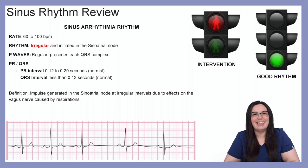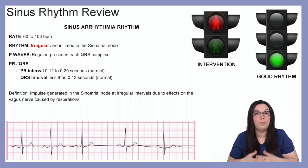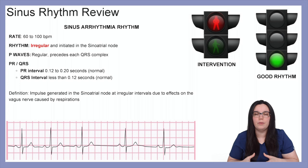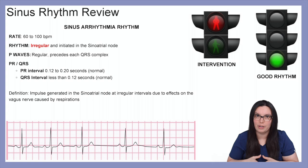Let's take a look at sinus arrhythmia. The rate of sinus arrhythmias will be normal — between 60 to 100 beats per minute — but what makes this different is the rhythm will be irregular, though it's still initiated by the sinoatrial node. P waves will also be regular, preceded by the QRS, and the PR interval will be between 0.12 to 0.2 seconds — that's normal — and our QRS will be less than 0.12 as well, which is also normal.